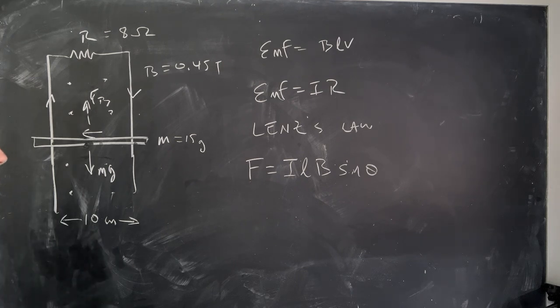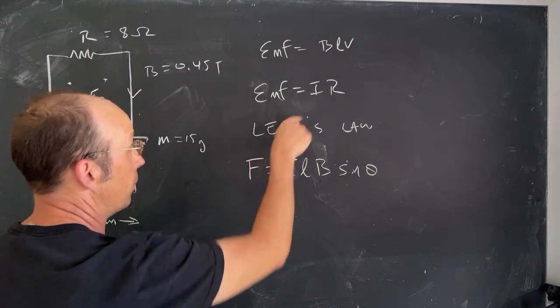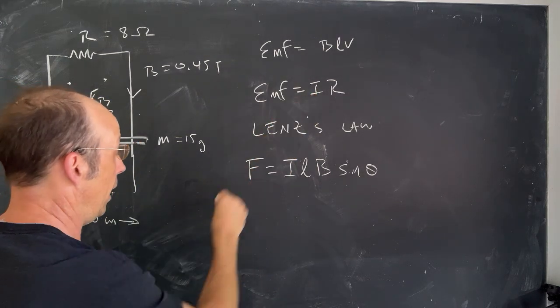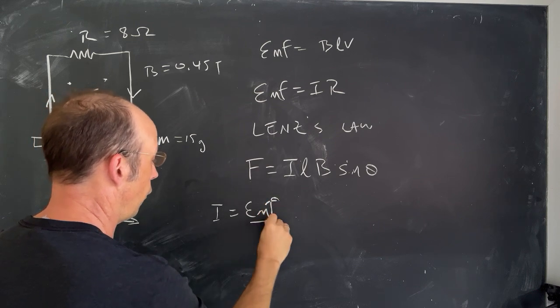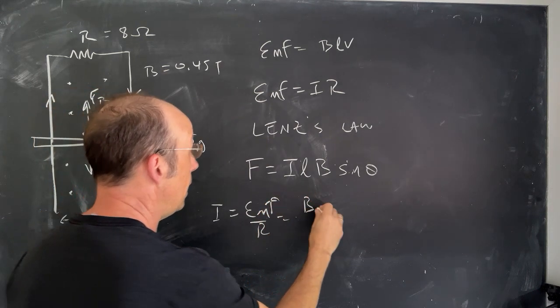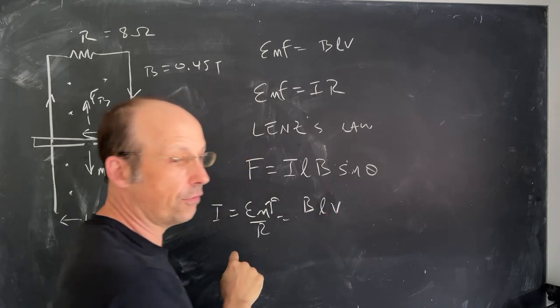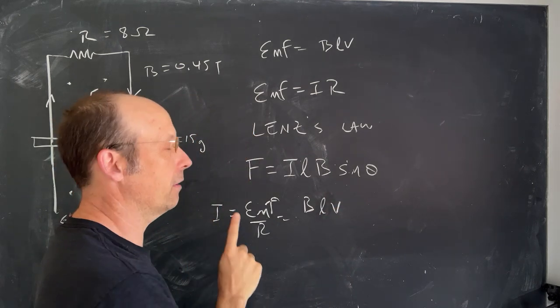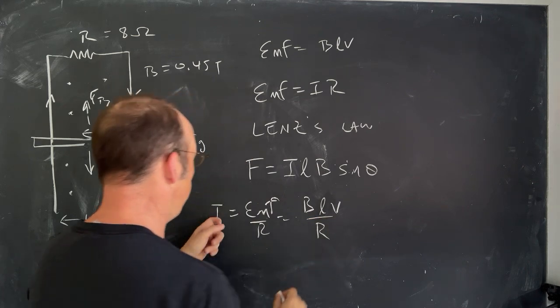Let's put everything together and calculate what we need to know. So I know the EMF is BLV, and that's going to be equal to IR. So I want to solve this for I. I is EMF over R, which is BLV. We're using lowercase V because capital, I mean, lowercase L because capital L is the inductance over R. So that's I.